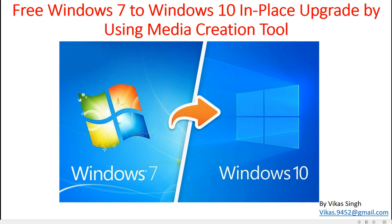Before you upgrade your operating system from Windows 7 to Windows 10, I always recommend making sure you have a current backup of your system — your downloads, My Documents, all folders. If you have any other drive like a D drive or E drive, make sure you have those backed up also. Just to make sure, in case anything goes wrong during the upgrade or you accidentally wipe the disk, you are not going to lose your data. Backup your machine first, then go ahead and try this.